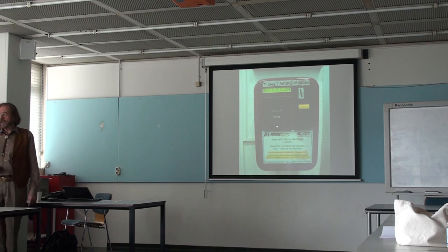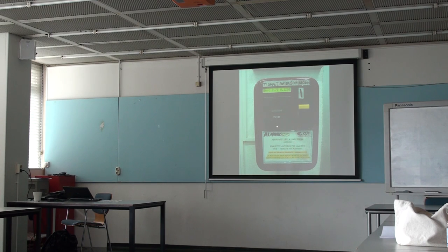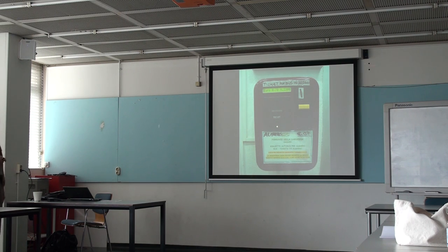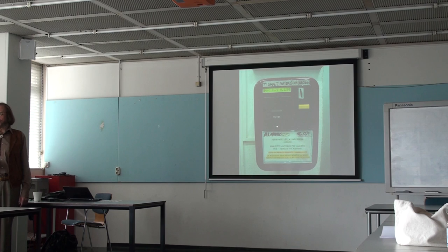And this is an interesting object, an interesting artifact. Because, first of all, it's a machine, and it says 'ticket.' This is English. I can understand, even though I don't speak Italian. And I could probably put coins in. And it says here: Euro .70, and then some code that I don't understand. And apparently, many people didn't understand. So, at a certain moment, somebody put a sticker on it: 'Ticket for bus to Alghero.' Aha.